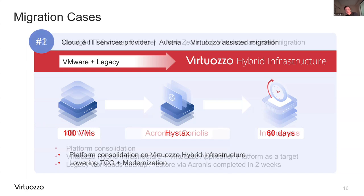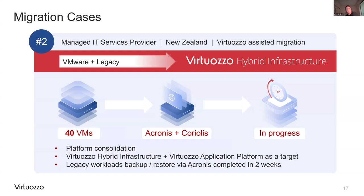The second case is a managed IT services provider from New Zealand — again, platform consolidation for VMware and legacy workloads on VHI. Virtuoso Application Platform was one of the solutions they chose — that's our application-centric platform-as-a-service solution with automated application deployments, CI/CD, and other features. The legacy part was moved in two weeks while the VMware part is still in progress. Acronis and Coriolis are the tools being used here.